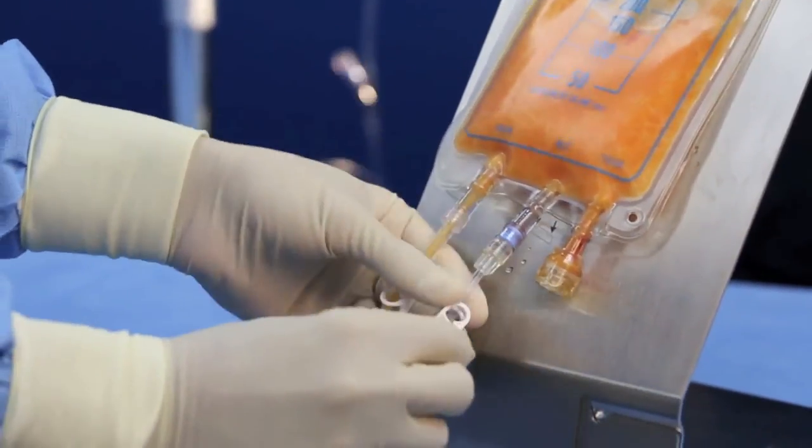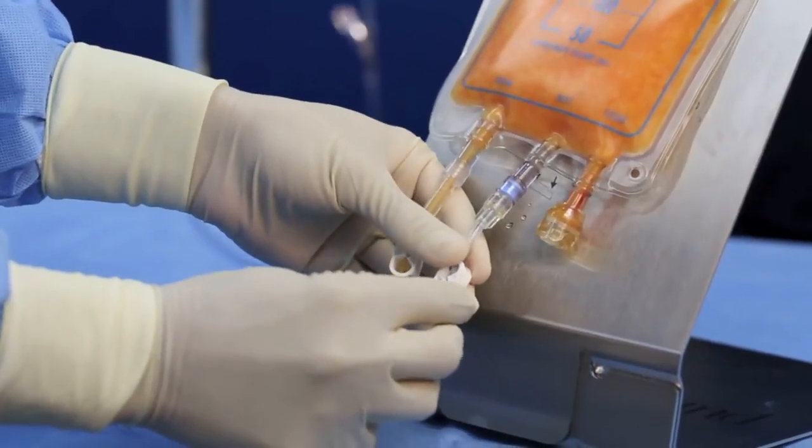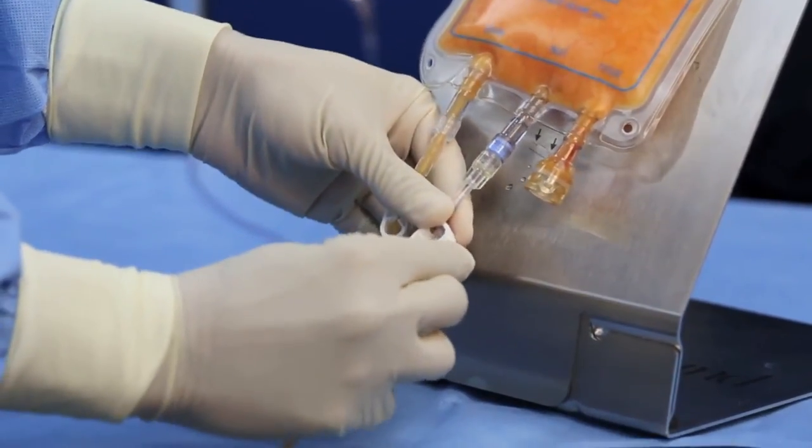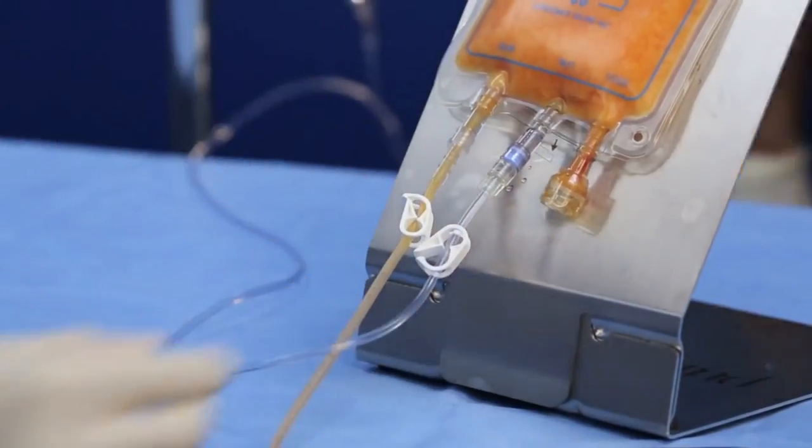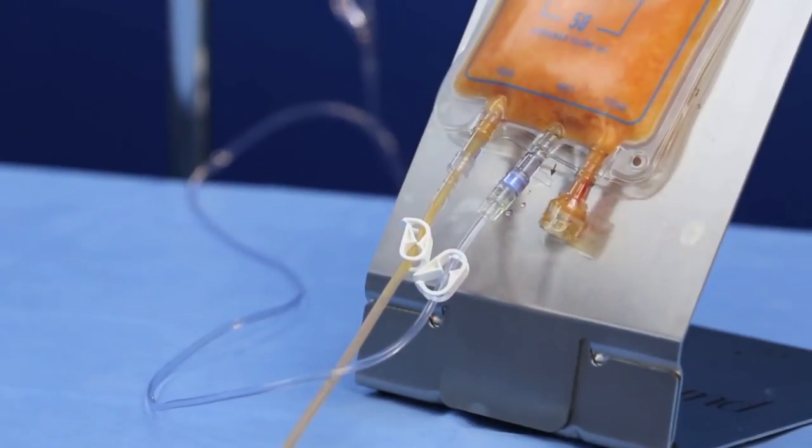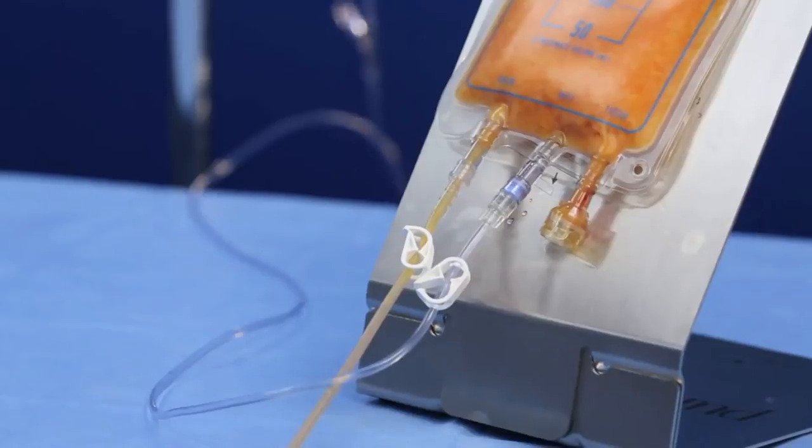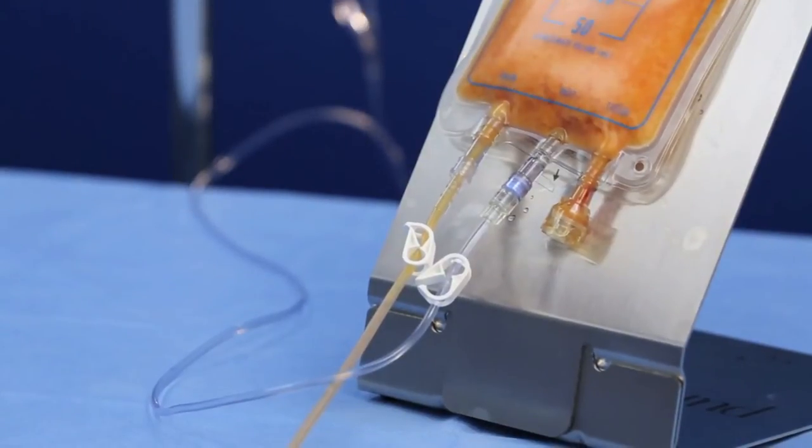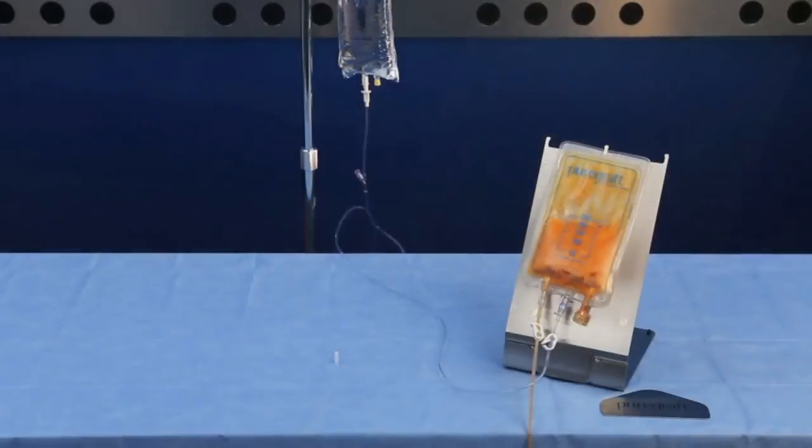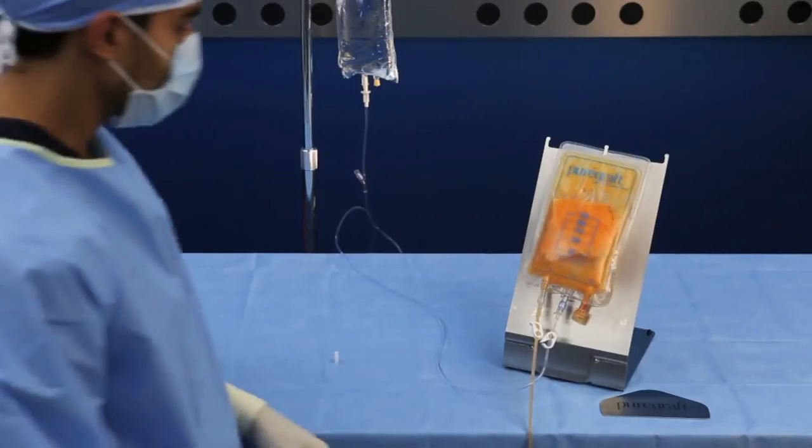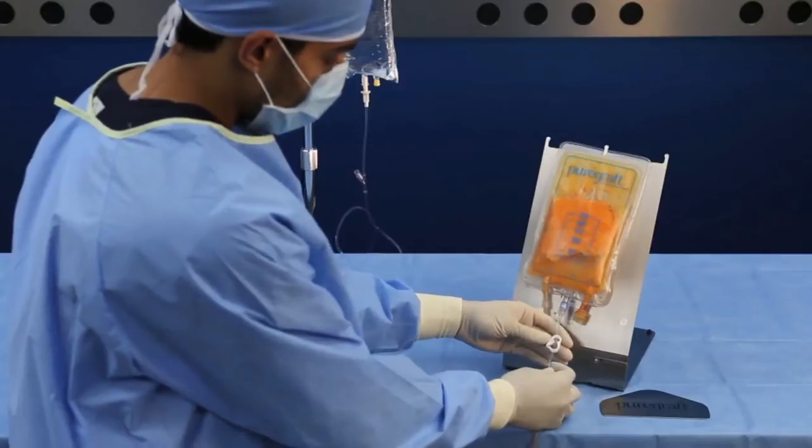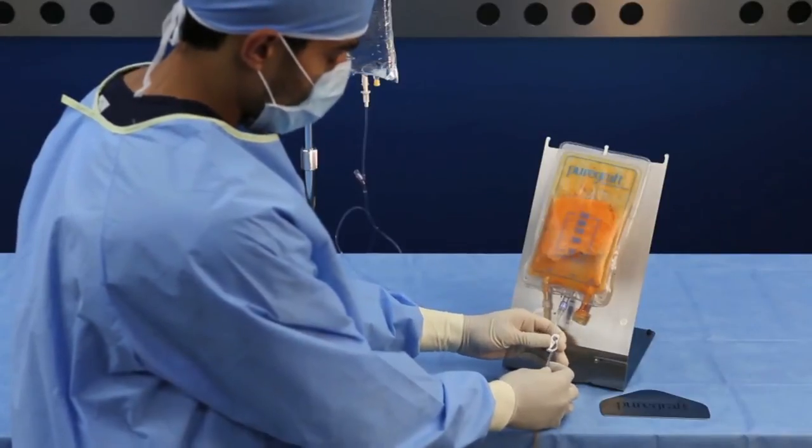Once both sides of the inlet tubing set are attached, open the clamp to add the desired amount of lactated Ringer's solution. Close the clamp and disconnect the inlet tubing set.